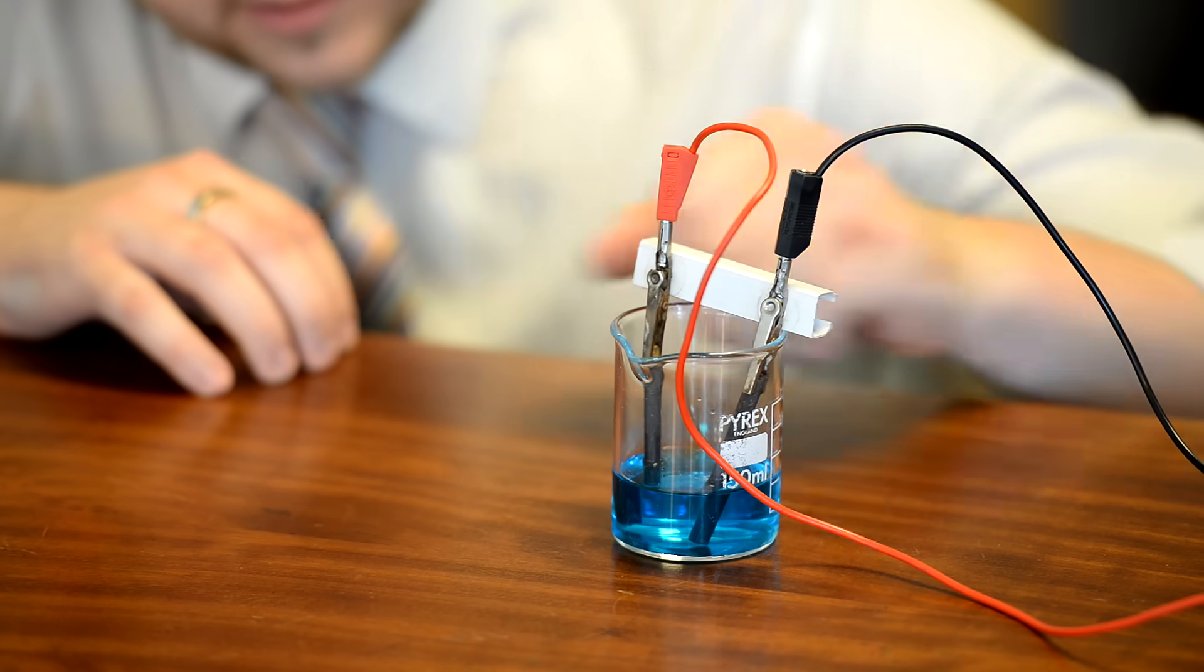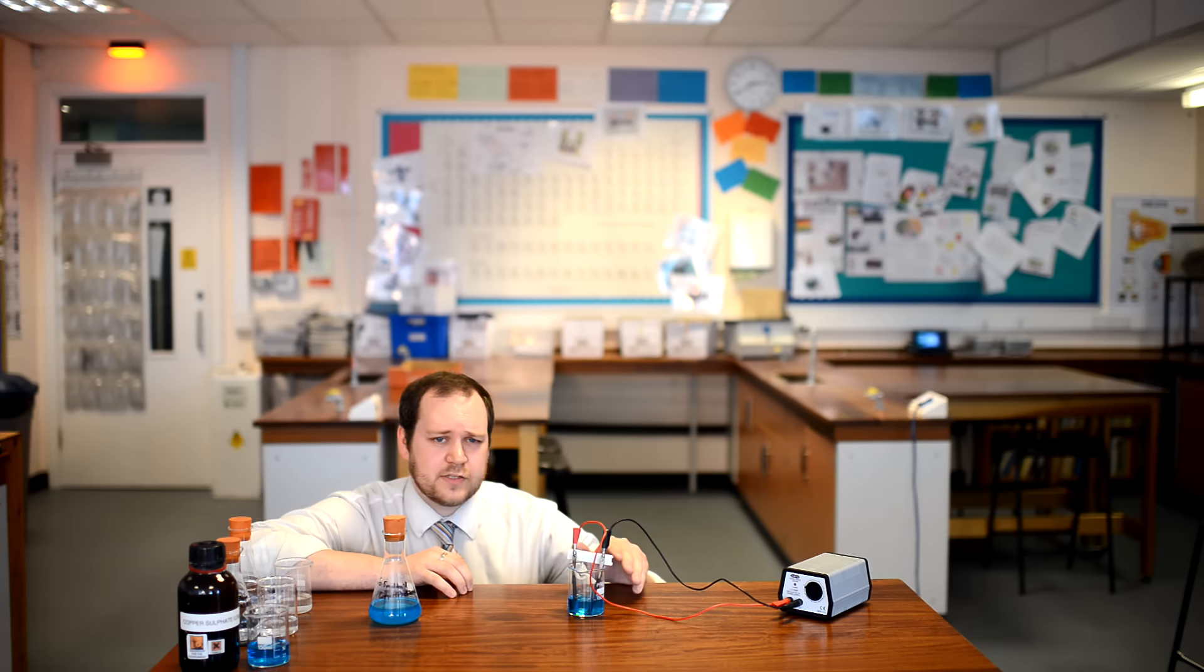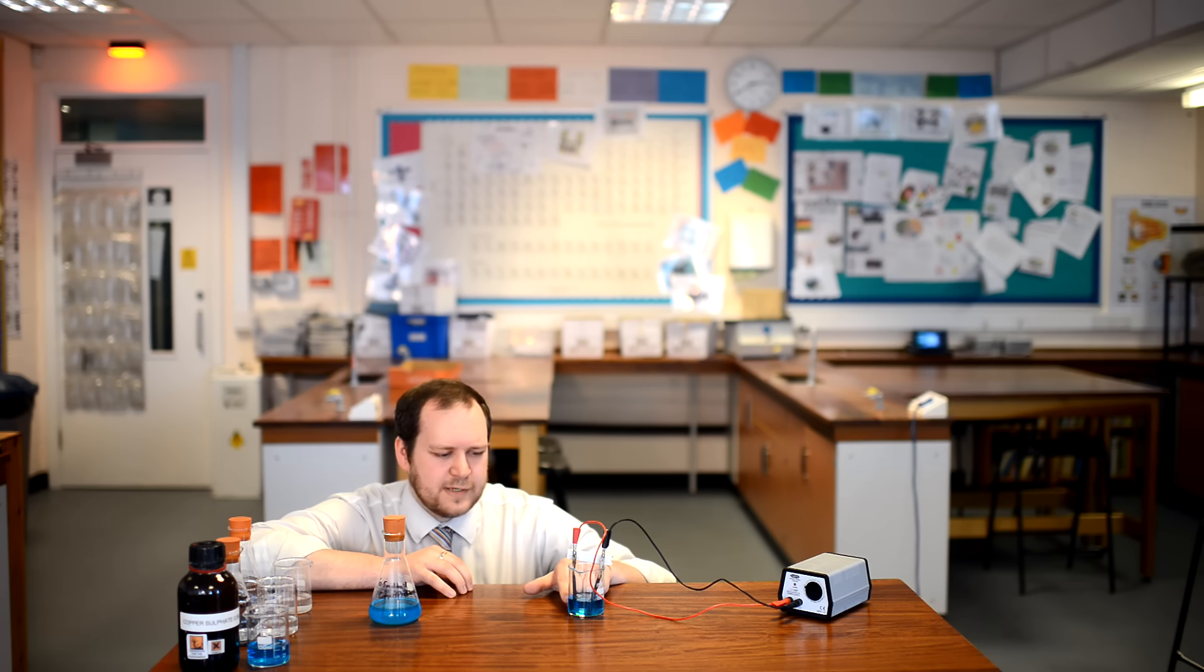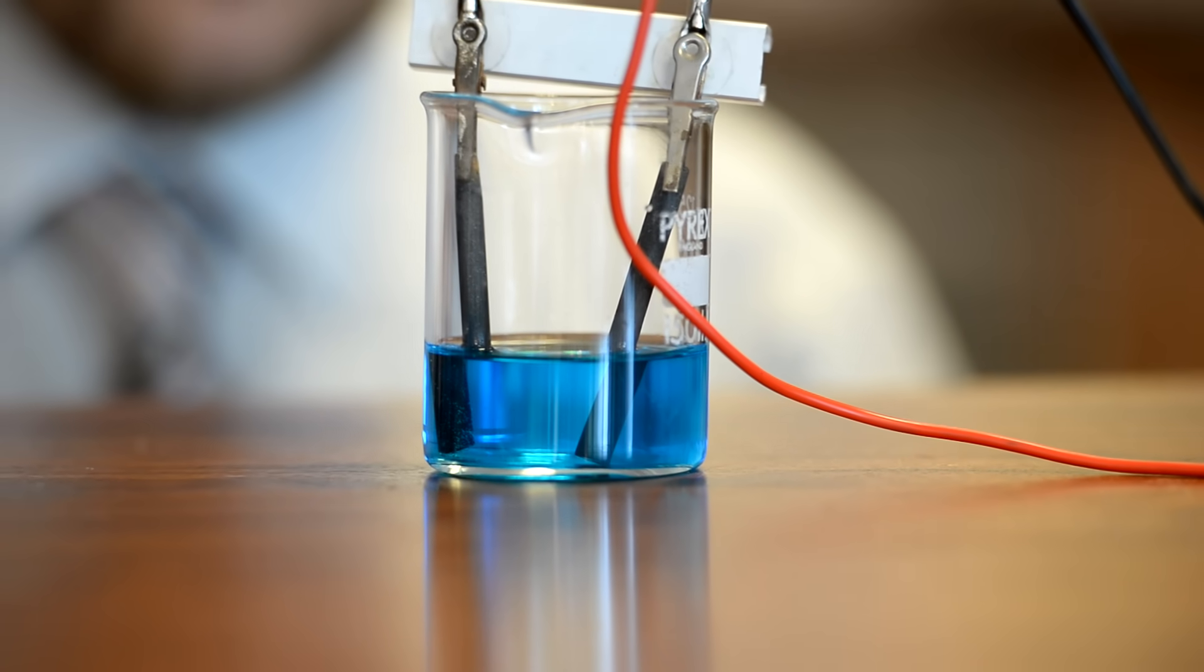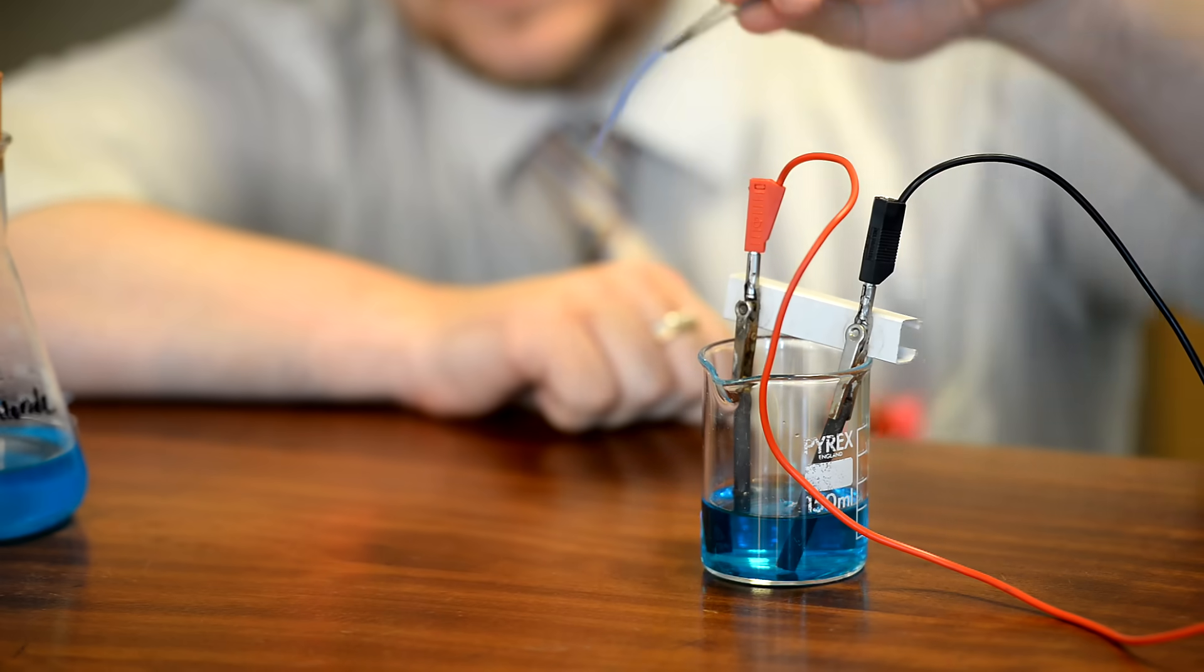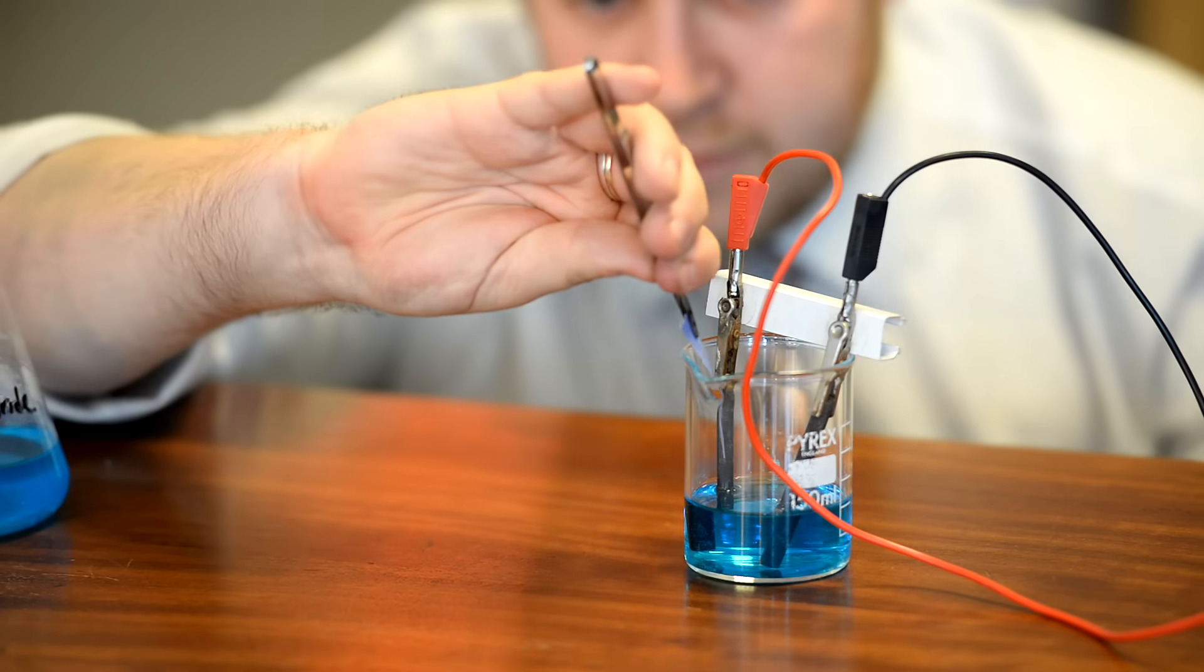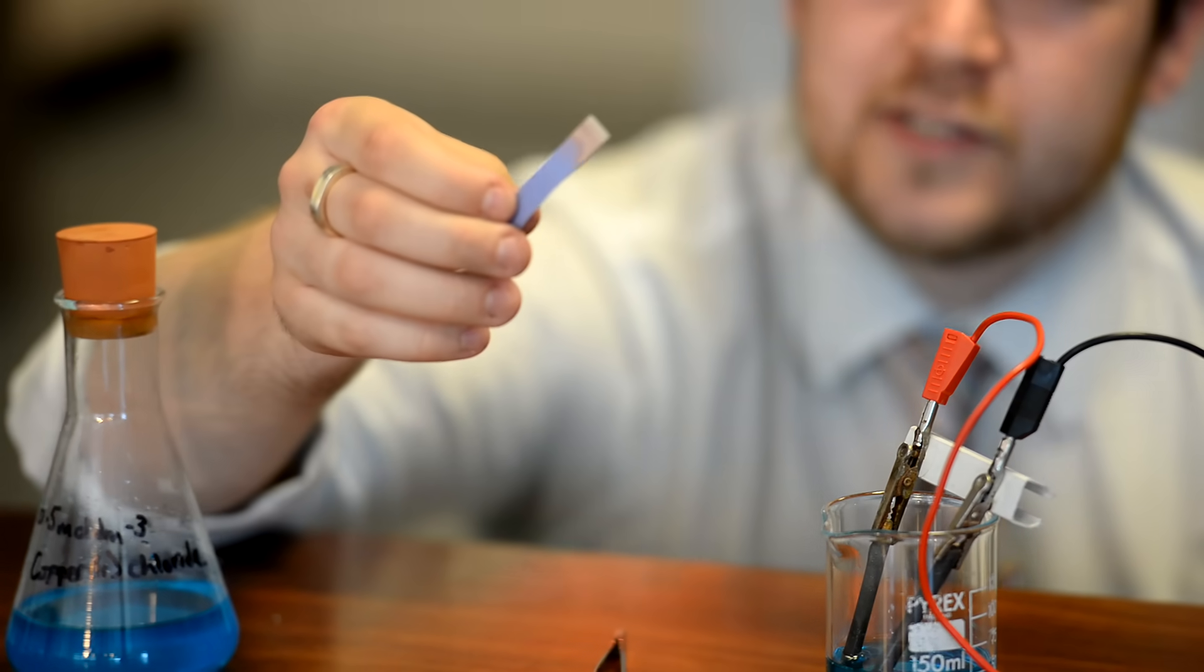The copper chloride contains both copper ions which have a 2 plus charge and chloride ions which are Cl minus. Now what we would expect to see is that at the positive electrode we're going to have a gas being formed and we can see that with bubbles. Now in order to test for the chlorine ions, we're going to hold a piece of blue litmus paper just above the anode. And what we should see where the chloride ions have formed chlorine, the litmus paper is bleached. The bleached litmus paper shows a positive test for chlorine.